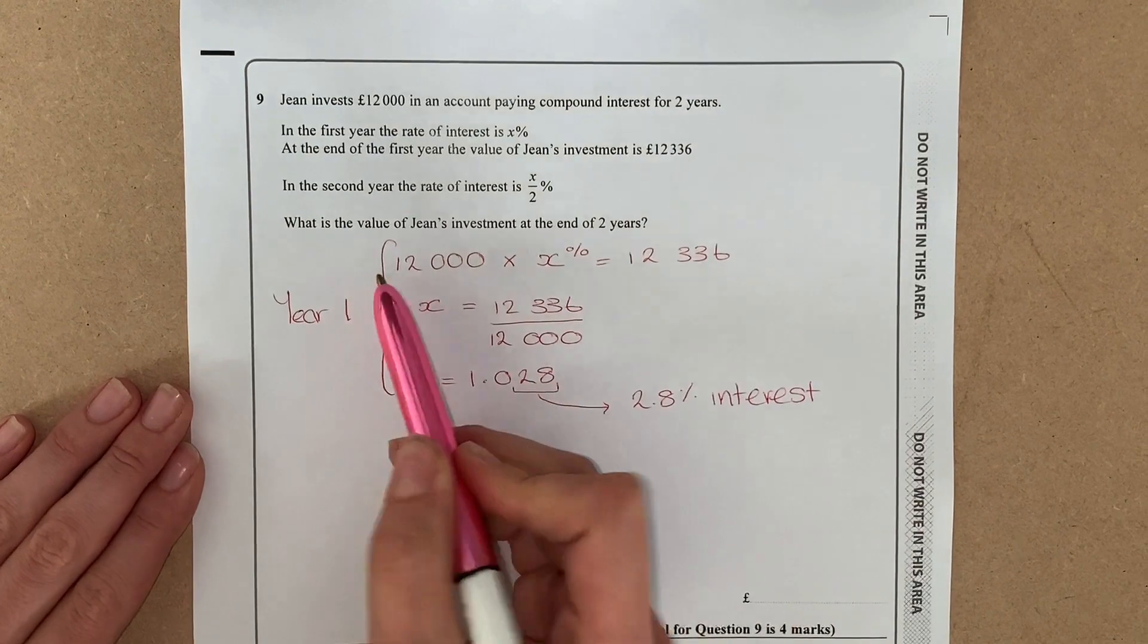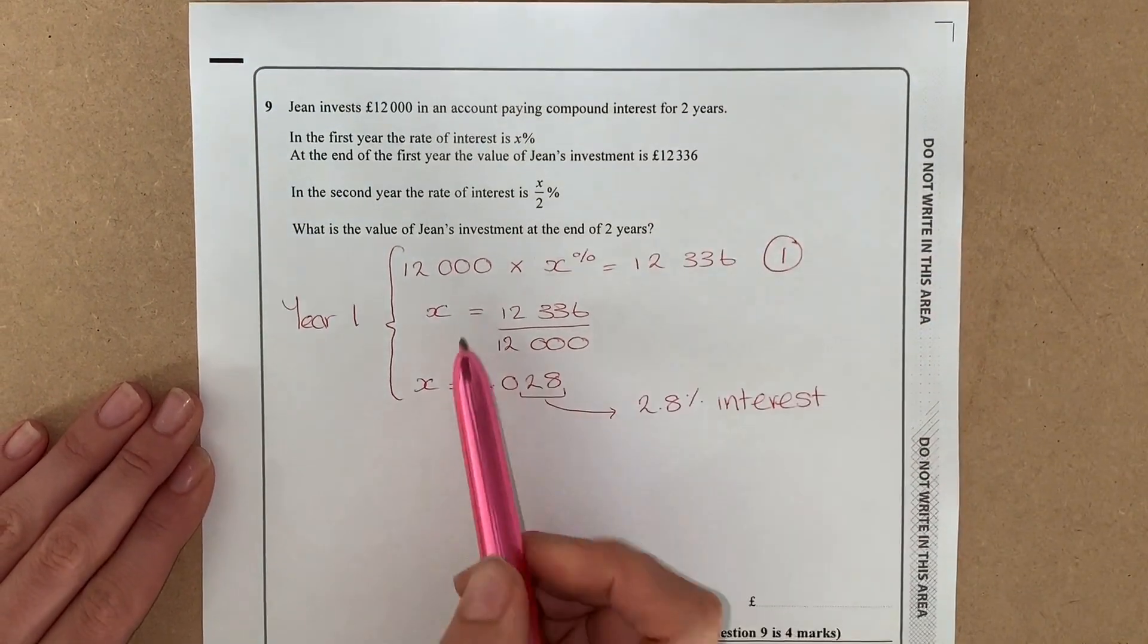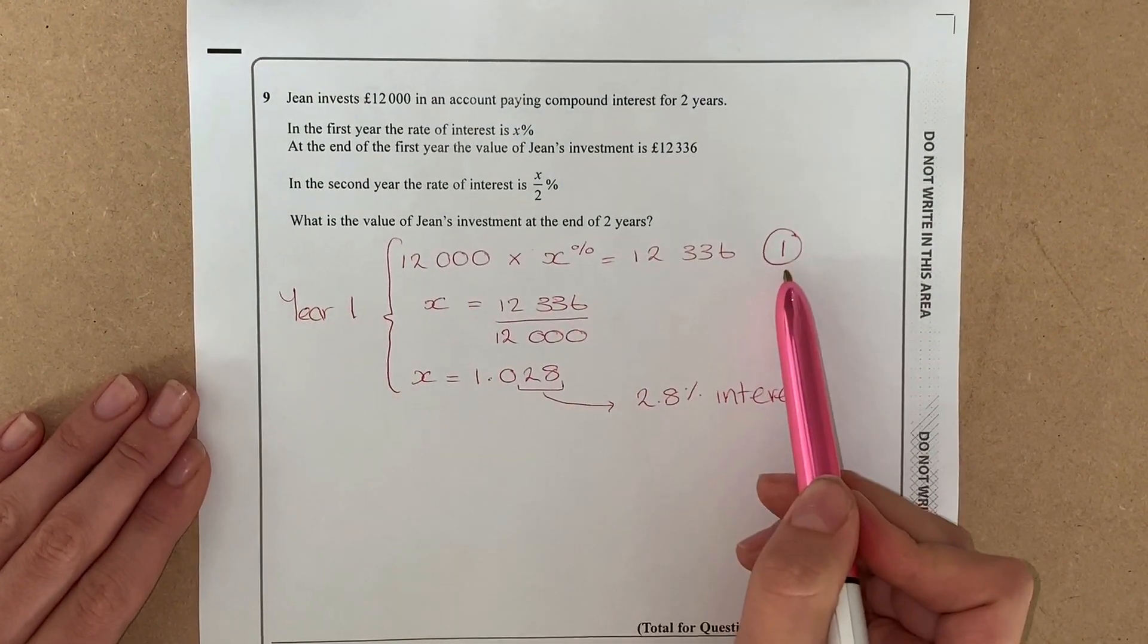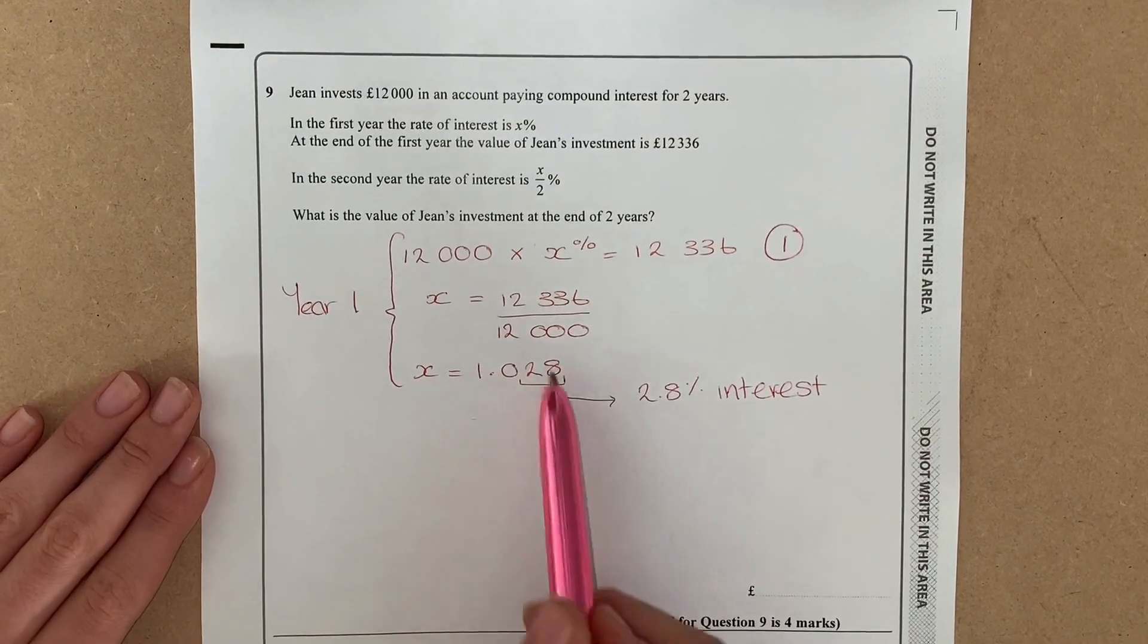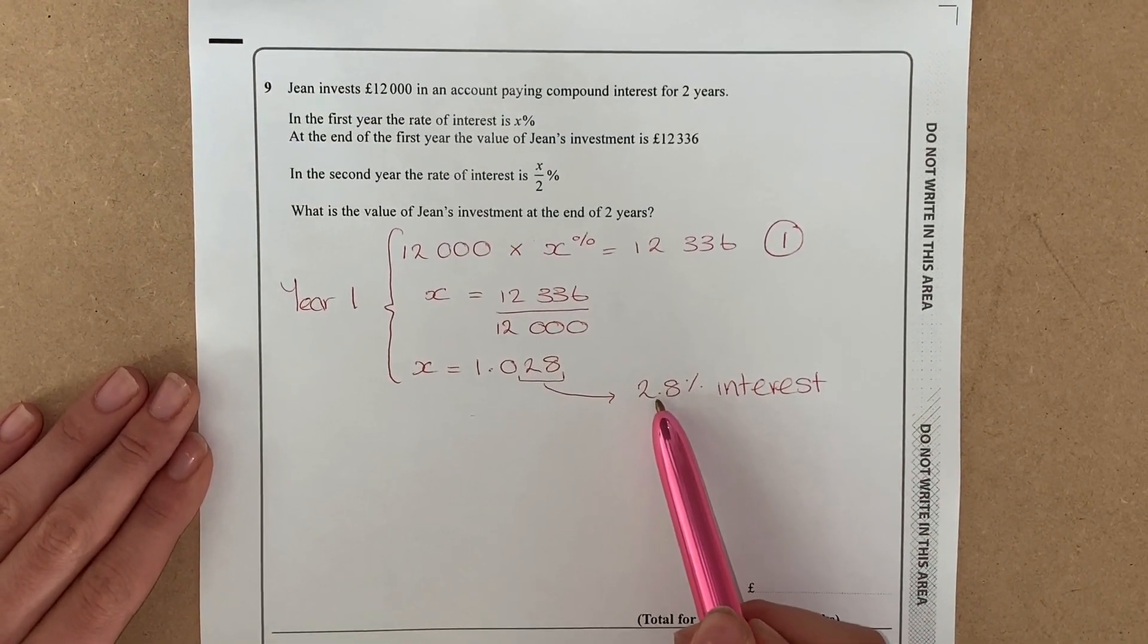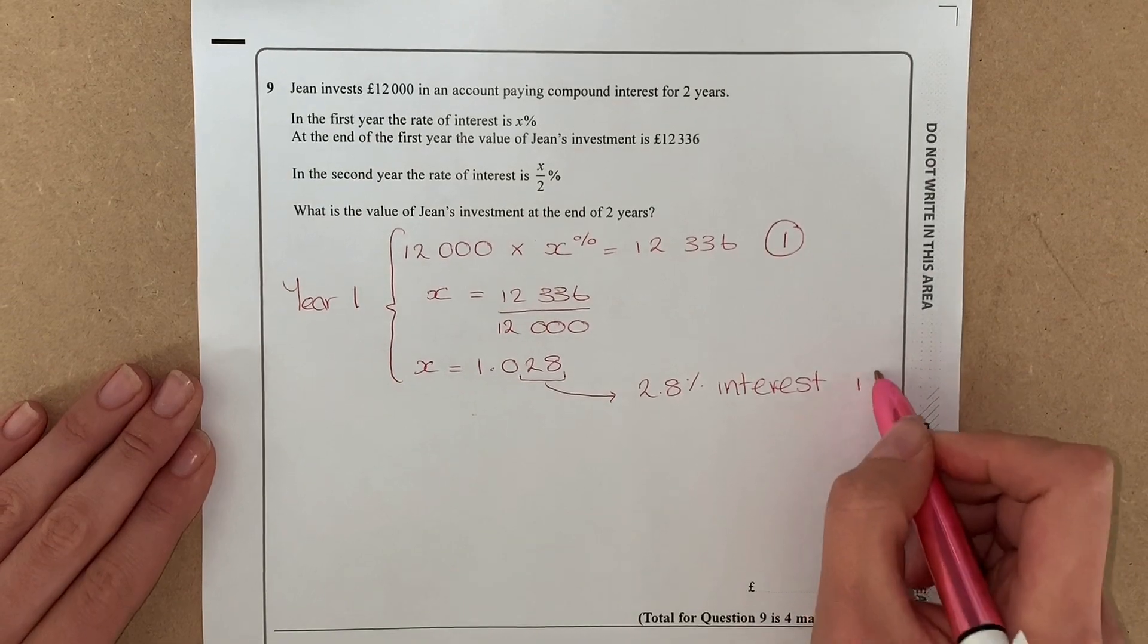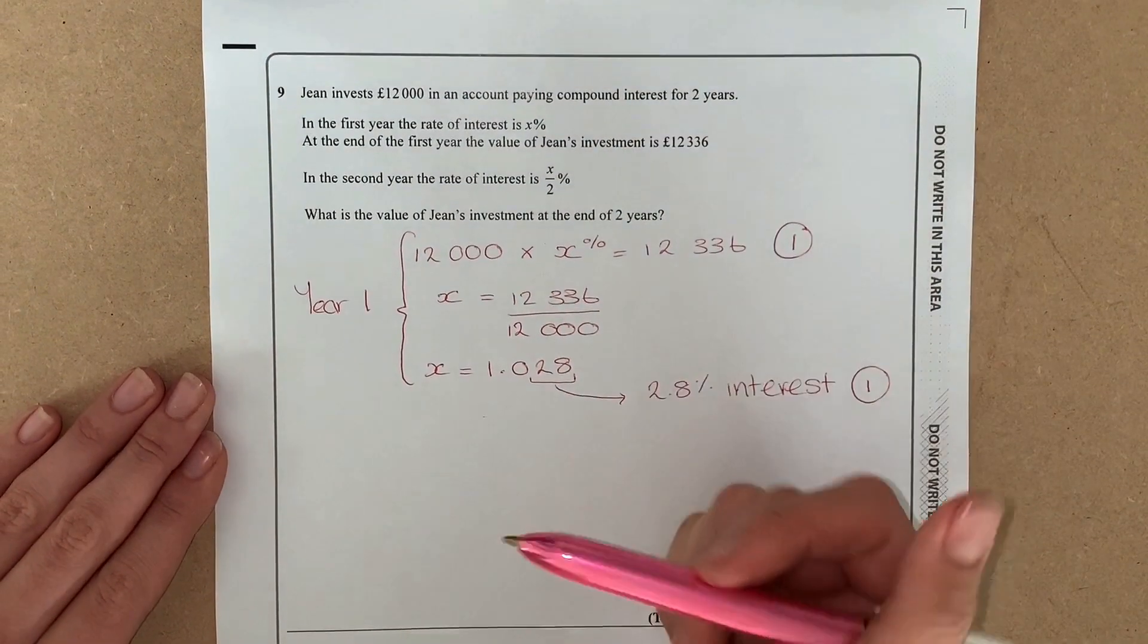Now to just talk about marks: if we look, by setting up the equation we had one mark, so in trying to solve and setting up the equation, and for understanding your answer, so knowing that actually we were adding on 2.8 percent, that's your second mark.